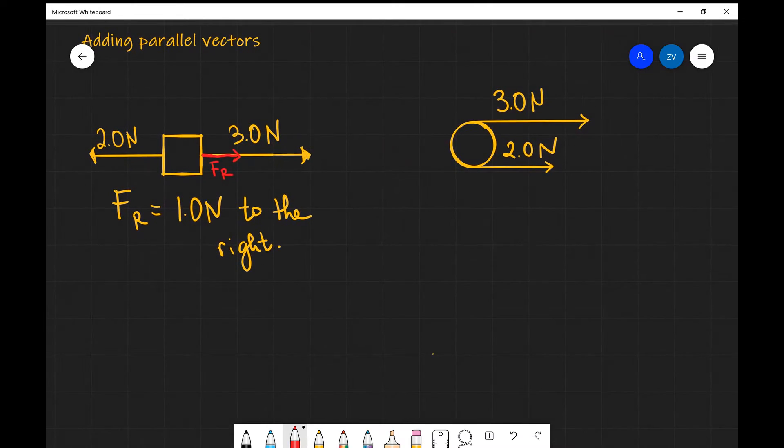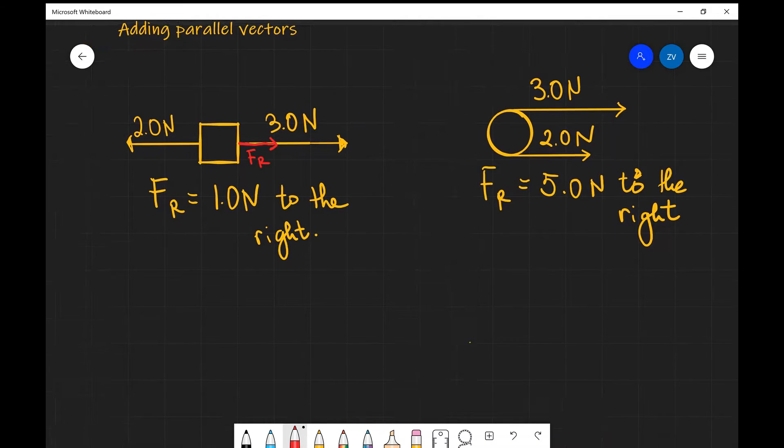Now if the two forces are acting in the same direction, what we're going to do is we're going to add them. So in this case the resultant force, we have a pulley system over here with 3 newtons to the right and 2 newtons to the right, so the resultant force is just 5.0 newtons to the right. Once again we could represent this with an appropriate arrow going to the right, or we could just write this down as we have in this case. Perfect,